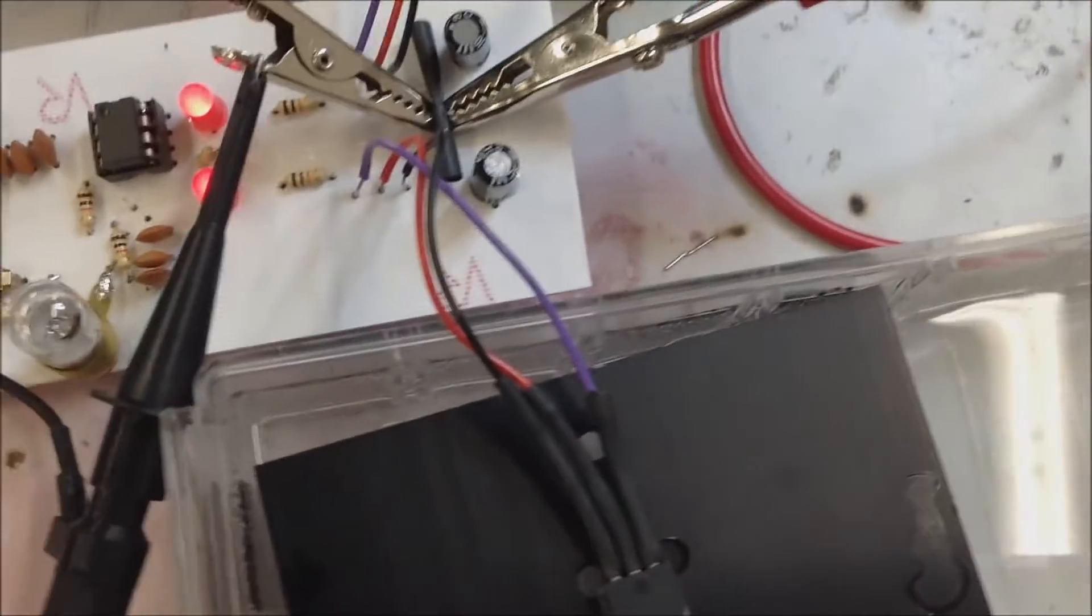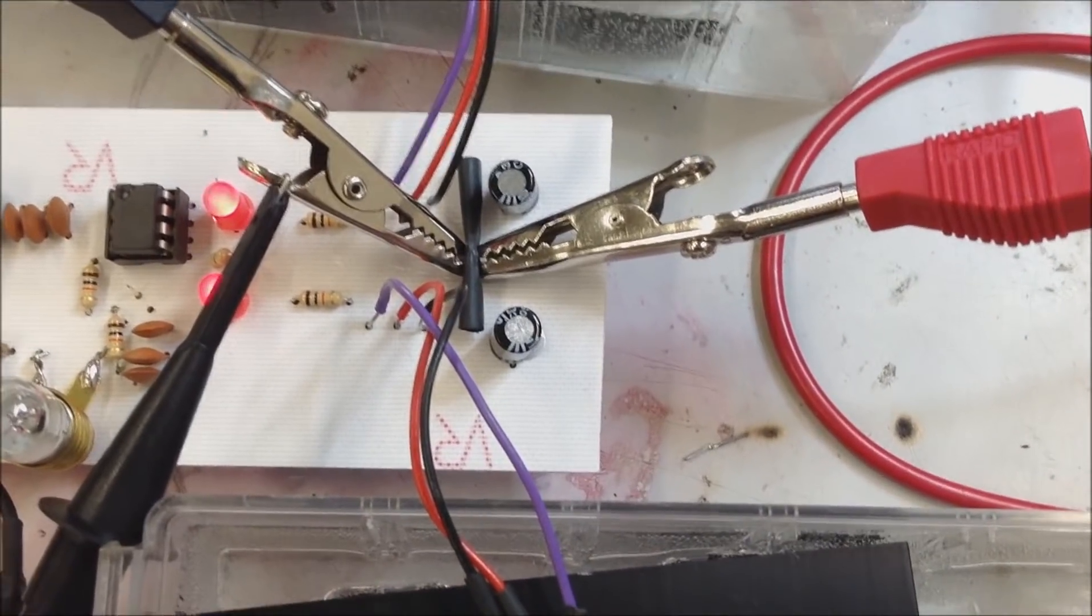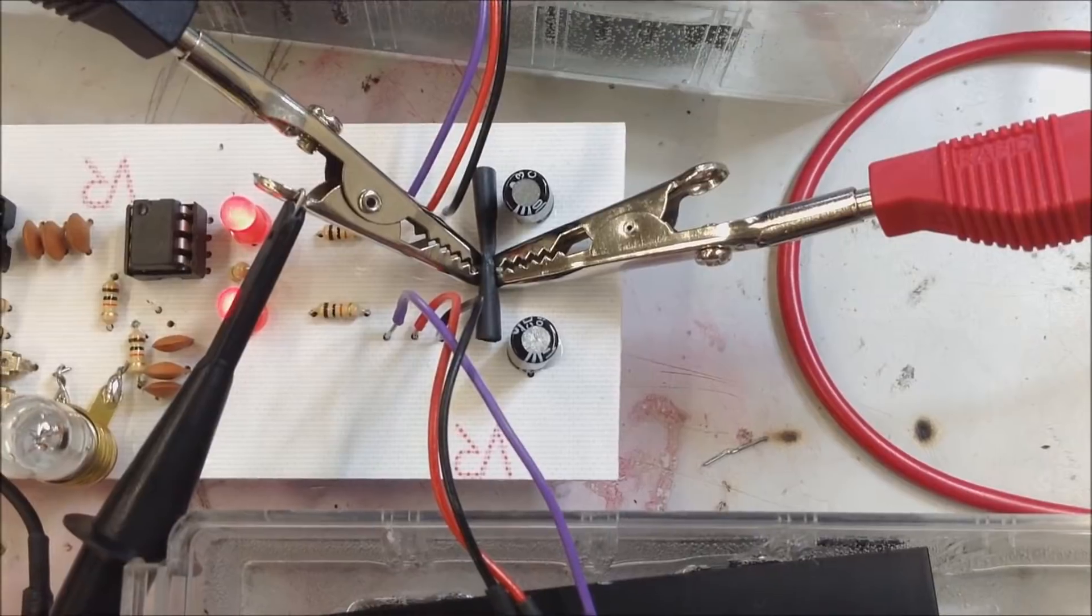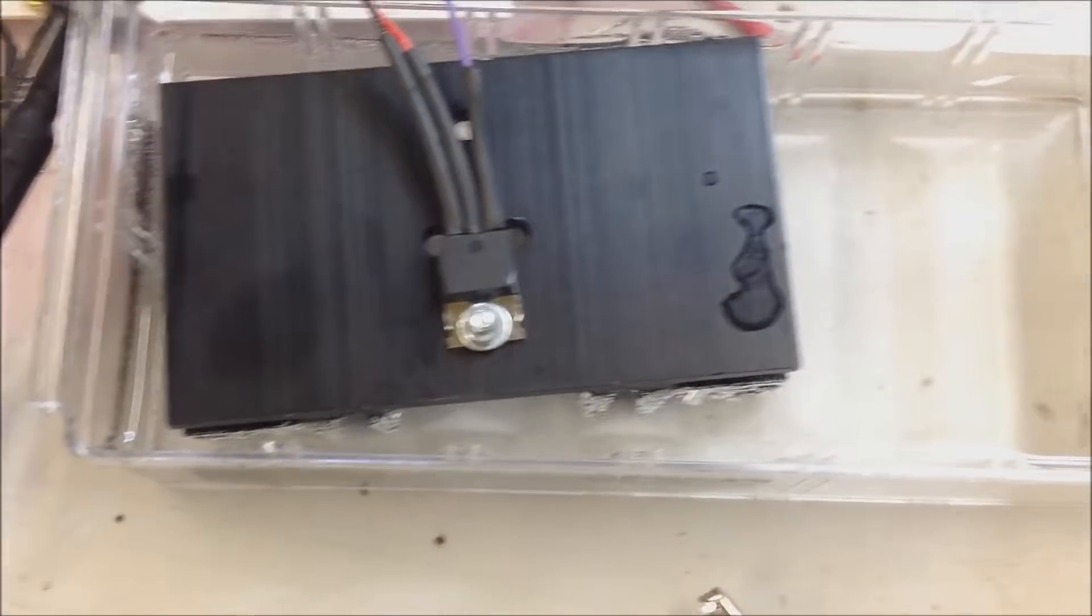And then we've got the output there and once again the output is also, as you can see, separated by a piece of rubber. And a little close up on the heat sinks as well. You can see the bubbles around the heat sinks.